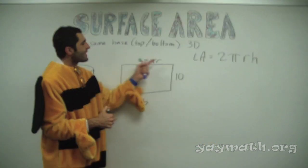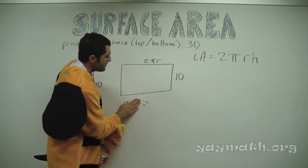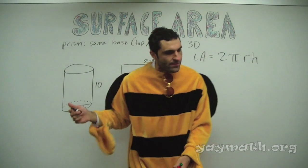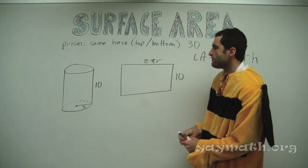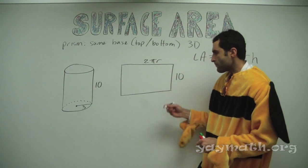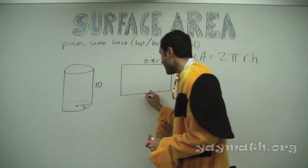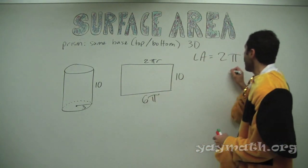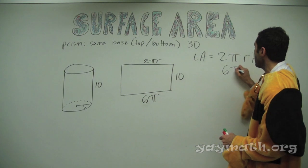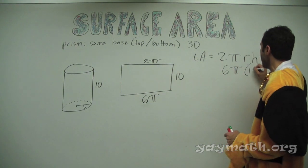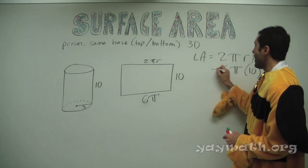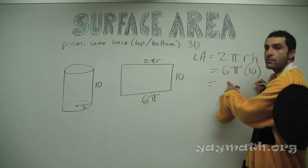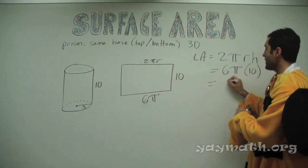Let's get 2πr in this case — it is 6π. So that's 6π times 10. And what is this? 60π.